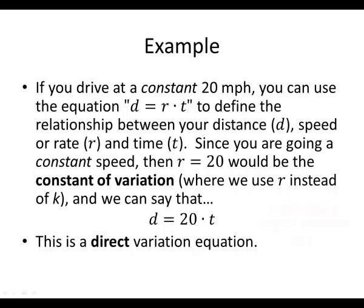One thing to notice is that as t gets bigger, d also gets bigger. And if you don't believe me, try some different numbers for t. Put in a 2, and then put in a 3, and then put in a 4. And see what happens to d when you multiply it by 20. And that's an important aspect of direct variation.